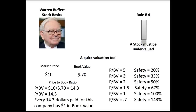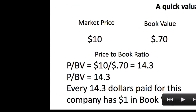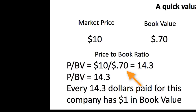Now let's look at the price-to-book value ratio, which we haven't covered yet. We do the same thing as with the P/E ratio — we take the price, which is $10, and divide it by the book value. Taking $10 divided by 70 cents gives us a ratio of 14.3. What does 14.3 mean? For every $14.30 you spend buying this company, you have $1 of equity in the business. Just like the P/E, the lower the number, the better, because you have more safety on your investment.